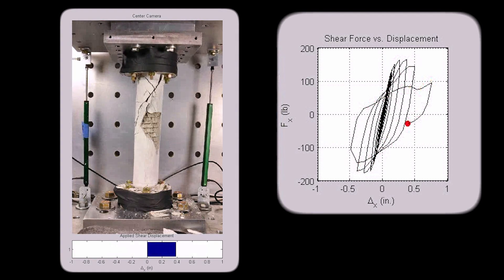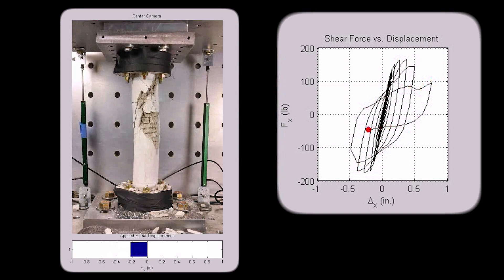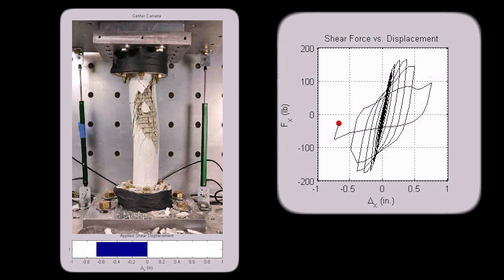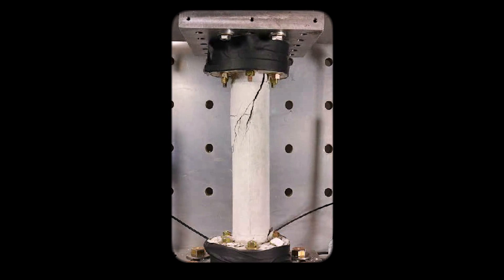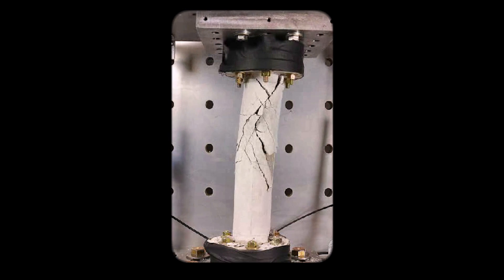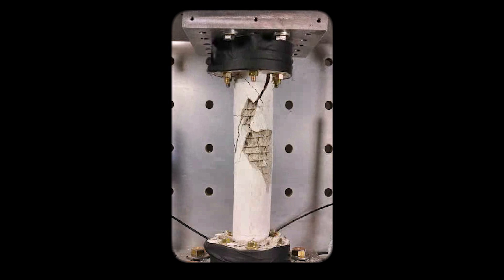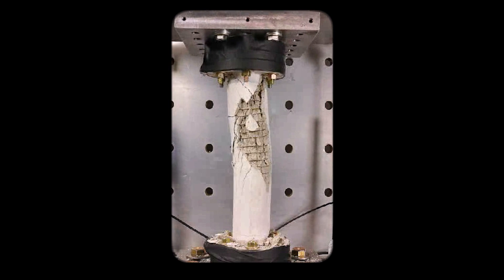The specimen is then taken through a cycle of increased displacement to assess the post-peak behavior of the pier. This includes strength loss with increasing displacements and is not possible to accurately predict using computer analysis tools.